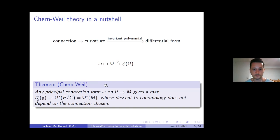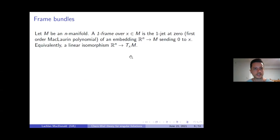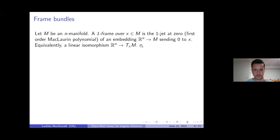For any manifold we have the one-frame bundle. It's a principal fiber bundle; over each point x the fiber is the collection of all one-frames, which are first-order Maclaurin polynomials of embeddings from R^n into M. You can think of these as coordinate charts, assuming n is the dimension of the manifold. Equivalently — as it's usually thought of — one-frames are linear isomorphisms from the vector space R^n to the tangent space sitting over the point x.